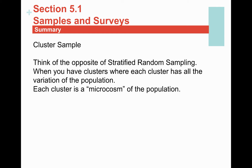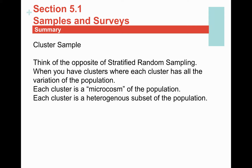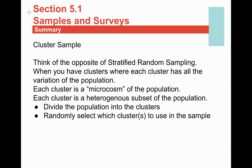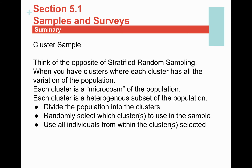Each cluster has all the variation of the entire population. So a cluster in my hypothetical example might be one of the large public high schools in the Tri-Valley area — like Dublin High, which has a lot of the variation that the entire Tri-Valley area would have. So strata are homogeneous subgroups, while each cluster is a heterogeneous subset that has all the variety and variation representing the entire population. To cluster sample, you divide the population into clusters, randomly select which cluster(s) to use, and then use all individuals from within that cluster.